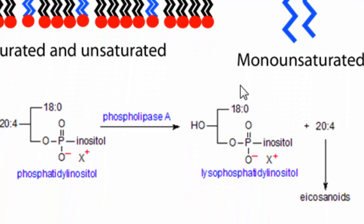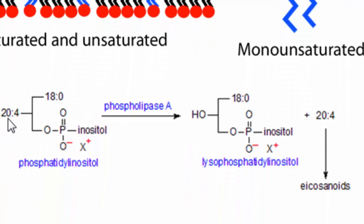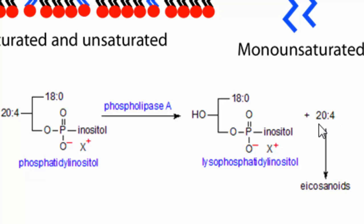Arachidonic acid contains 20 carbons with four double bonds. In order to be released, it must be freed from the plasma membrane; until then it is esterified within the phospholipid membrane. With the help of phospholipase A, it is cleaved to form arachidonic acid and phosphatidylinositol. From here, subsequent metabolism leads to the eicosanoids: PGD2, PGE2, PGF2 alpha, and thromboxane.